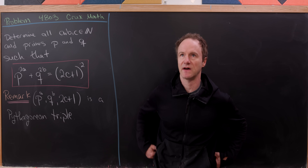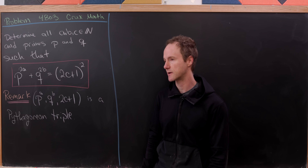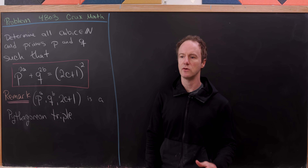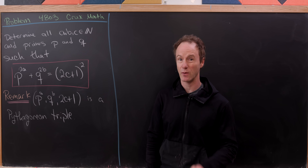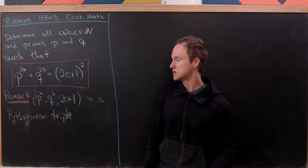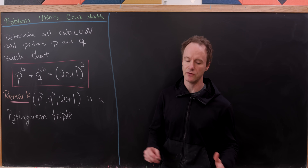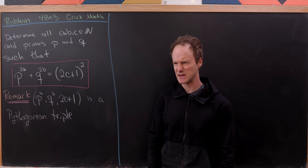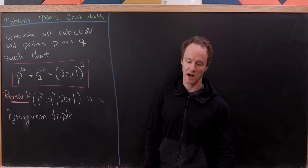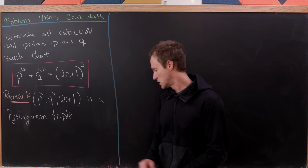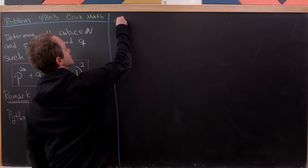So in other words, it satisfies the equation x squared plus y squared equals z squared. Now there's a well-known parametrization of Pythagorean triples that we could use here, but we're not going to do that because we want to keep this from requiring something that we're not going to prove. So let's just jump right into the solution.